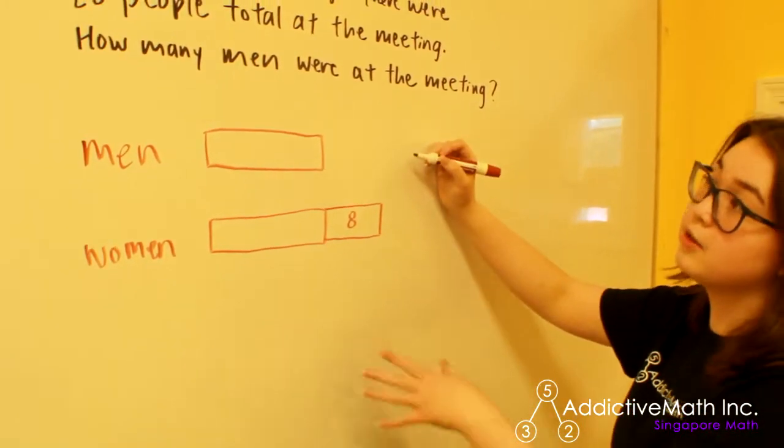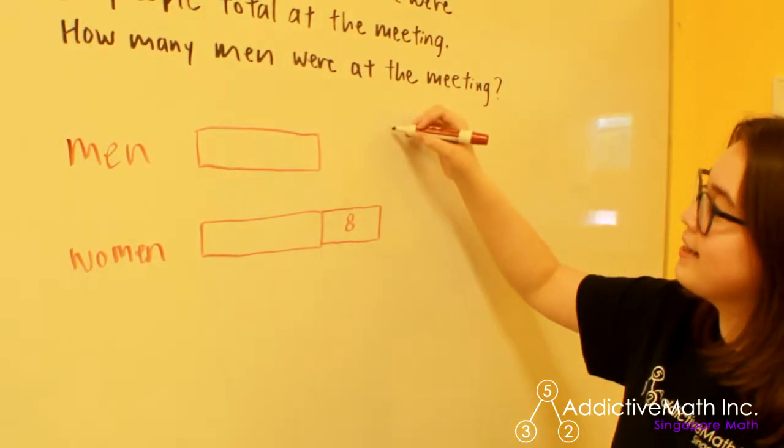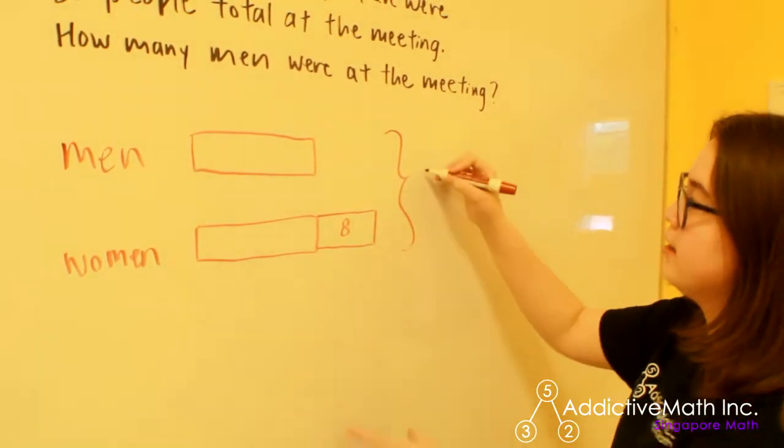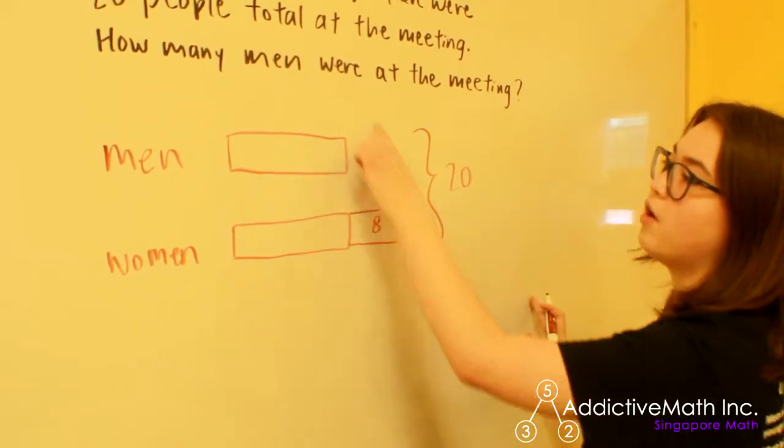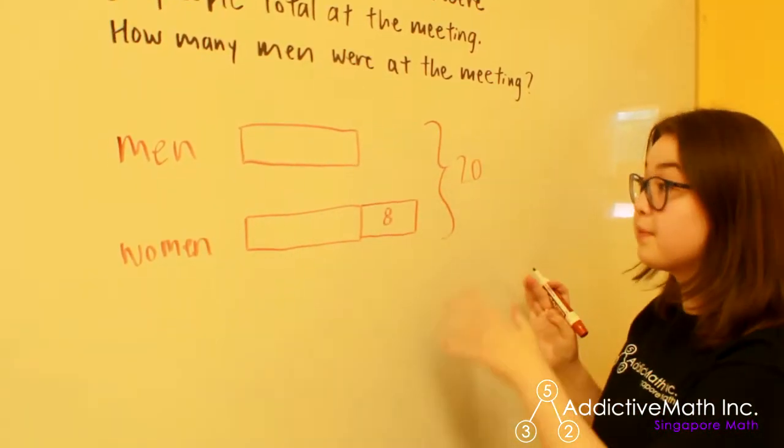And then it says there were 20 people total at the meeting. So I'm going to draw a bracket and write the 20 out here to represent that the total of all of these quantities known and unknown is 20.